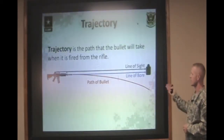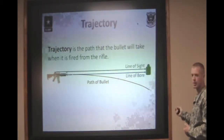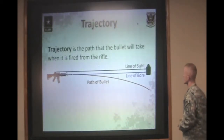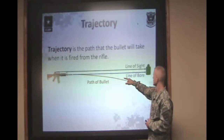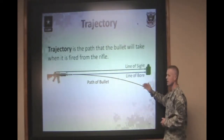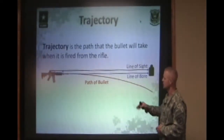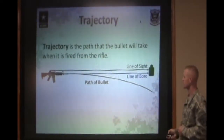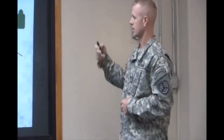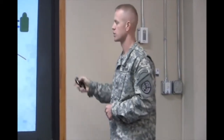Trajectory is the path the bullet will take when fired from the barrel. As you can see, when the line of sight and the line of bore are parallel, the trajectory of that bullet will fall short of the target if you do not increase the angle of departure. The bullet starts to fall towards the earth immediately upon leaving the muzzle when the barrel and the line of sight are parallel to the ground.